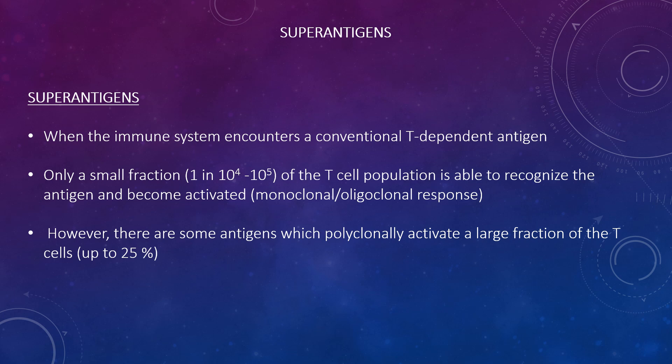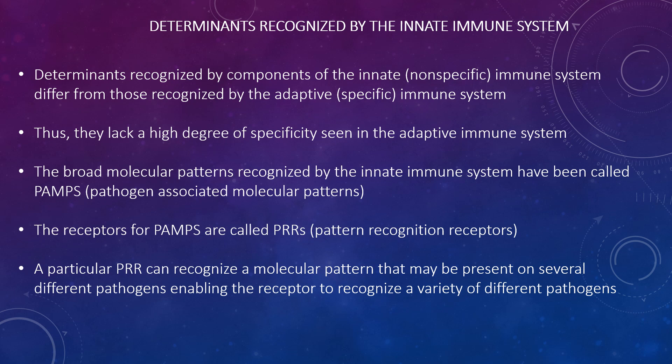Examples of superantigens include Staphylococcal enterotoxins, Staphylococcal exfoliating toxins, and Staphylococcal pyrogenic exotoxins, which are involved in food poisoning, toxic shock syndrome, scalded skin syndrome, and shock respectively. Although bacterial superantigens are the best studied, there are superantigens associated with viruses and other microorganisms as well. The diseases associated with superantigen exposure are partly due to hyperactivation of the immune system and the subsequent release of biologically active cytokines from activated T-cells.